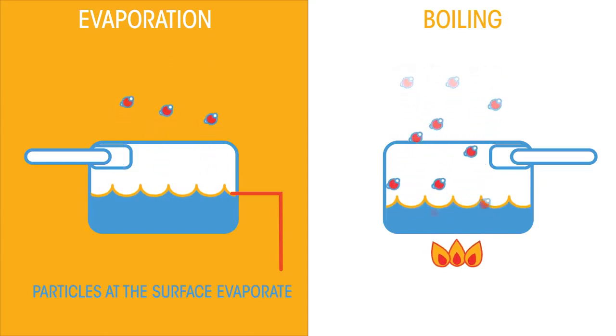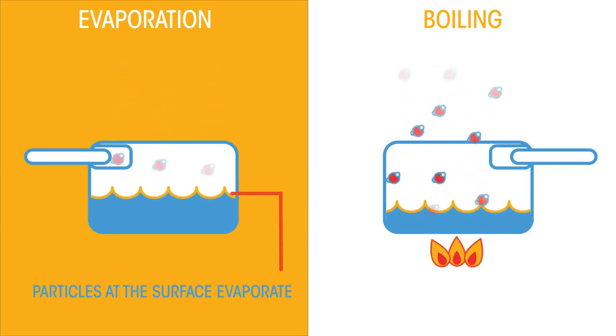Only the particles at the surface have enough energy to change from a liquid to a gas. Hence, evaporation is a slower process than boiling, even though it achieves the same state change. Both are types of vaporization.